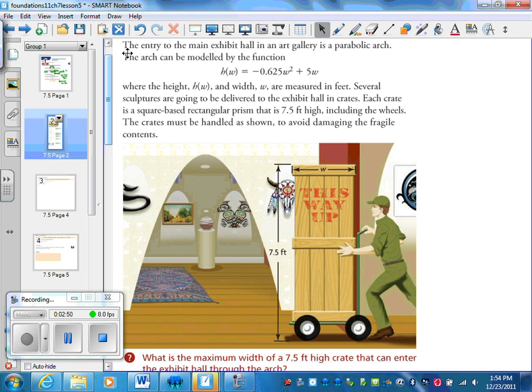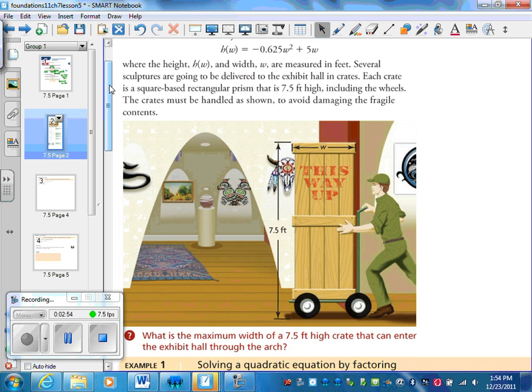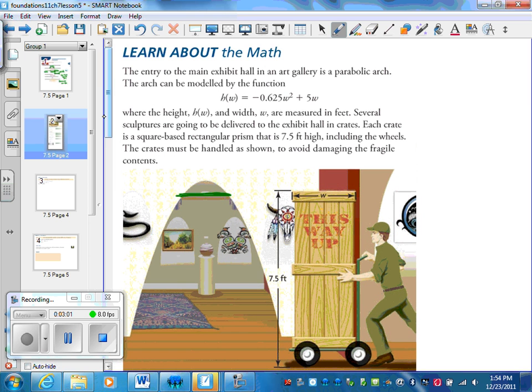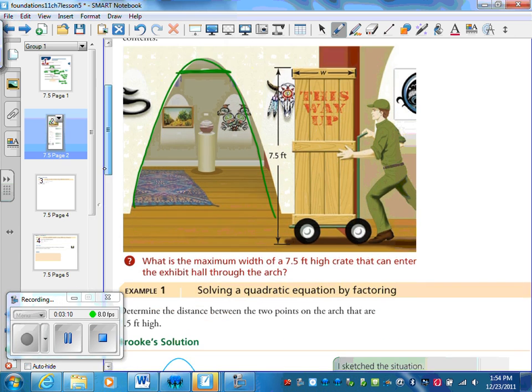Several sculptures are going to be delivered to the exhibit hall in crates. Each crate is a square-based rectangular prism that is 7.5 feet high, including the wheels. The crates must be handled upright, so completely upright, you can't put them on their sides, to avoid damage to the fragile contents. Notice that this is a concave down parabola, and that's because the coefficient of the square term is negative.